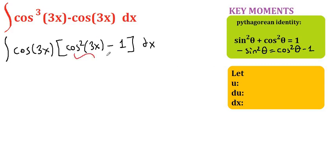So we can substitute this expression with negative sine squared of 3x because our argument is 3x here. Now let's rewrite. We pull the negative in front of the integral of cosine of 3x times sine squared of 3x dx.